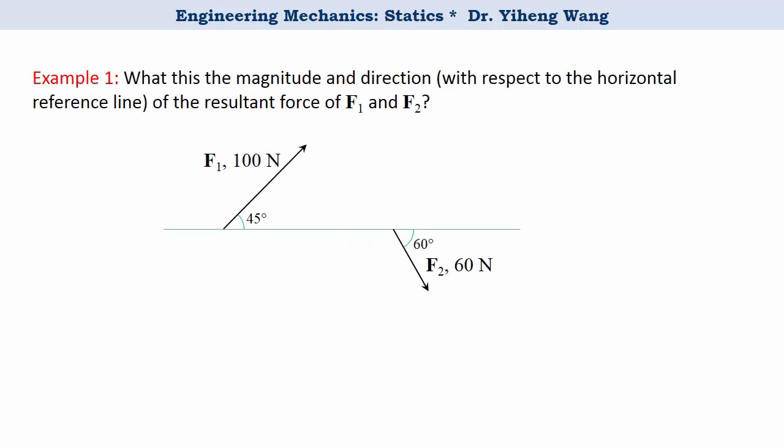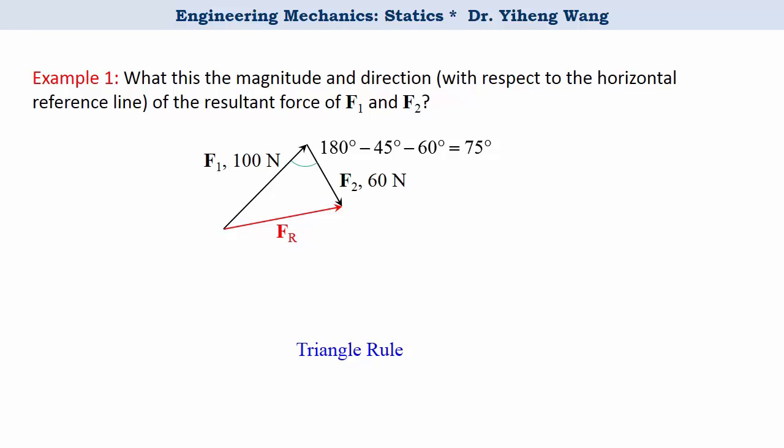Let's look at this example. For forces F1 and F2, their magnitudes and directions are both given, and we need to determine the magnitude and direction of the resultant force of these two. For this problem, we're going to apply the triangle rule. So we join the two forces in a head-to-tail fashion. So this vector is the resultant force vector Fr, and now the three forces form a triangle, and based on the geometry given in the problem statement, we can calculate that this angle is 75 degree.